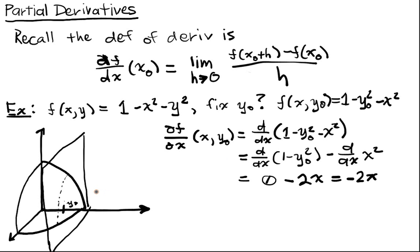This tells me: as I change my x value — so x is here, y is here, this is f(x, y) — as I change x, I get exactly this change in the slope. That tells me the steepness of the hill as I try to move in x. So if I start here at x₀, at the point (x₀, y₀), then the derivative in the x direction is negative 2x₀.